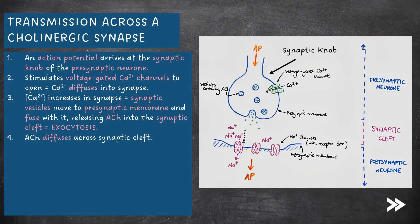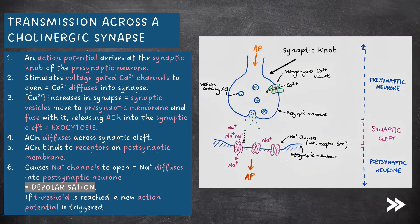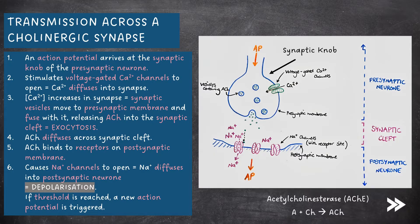Acetylcholine then diffuses across the synaptic cleft and binds to receptors on the post-synaptic membrane. This causes sodium ion channels to open, allowing sodium ions to diffuse into the post-synaptic neuron, resulting in depolarization of the post-synaptic membrane. If the threshold is reached, a new action potential is generated. Note that acetylcholine is broken down by the enzyme acetylcholinesterase, and the products are reabsorbed by the pre-synaptic neuron, where ATP hydrolysis provides energy for A and Ch to combine to produce ACh. The cycle is then ready to restart.